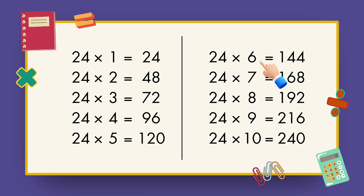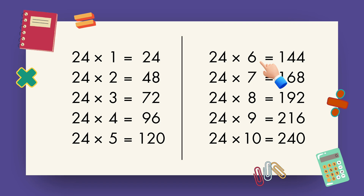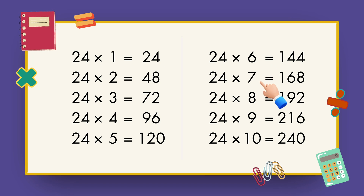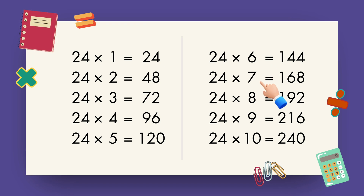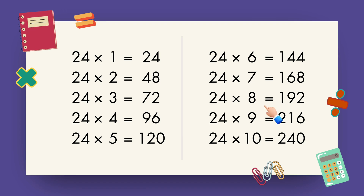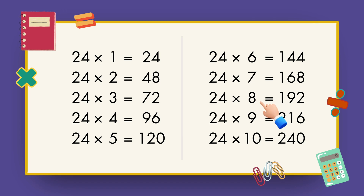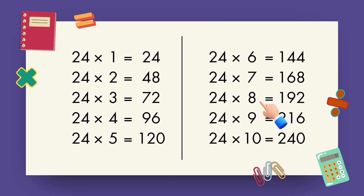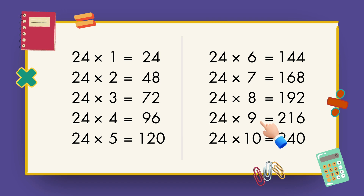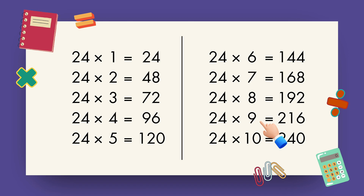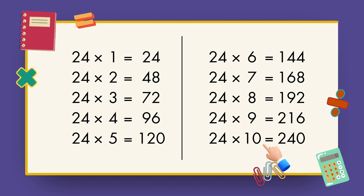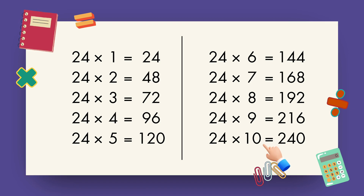24 sixes are 144, 24 sevens are 168, 24 eights are 192, 24 nines are 216, 24 tens are 240.